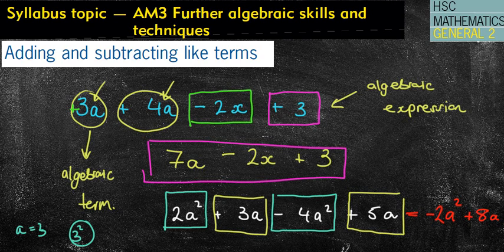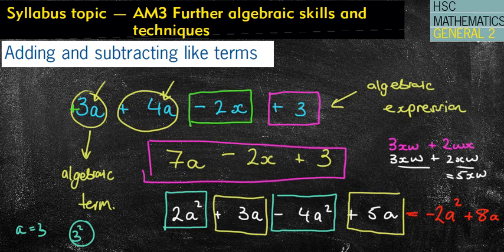The only other one that you might want to be careful of is when you have things that look like this: 3xw plus 2wx. Now, I know I've just said to you previously that it has to be exactly the same. But see how these two letters are next to each other? They are actually identical because I've got a times holding them in. Therefore, if I've got this, I could actually rewrite it as 2xw and therefore making them the same.